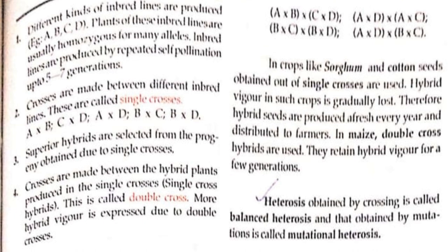Different steps of improving cultivars by utilizing heterosis: different kinds of inbreeding lines are produced. Plants of these inbreeding lines are usually homozygous for many alleles. Inbred lines are produced by repeated self-pollination up to five to seven generations. Crosses are made between different inbred lines — these are called single crosses. Superior hybrids are selected from progeny obtained from single crosses. Then crosses are made between the hybrid plants produced in the single crosses — this is called double cross. More hybrid vigor is expressed due to double crosses.